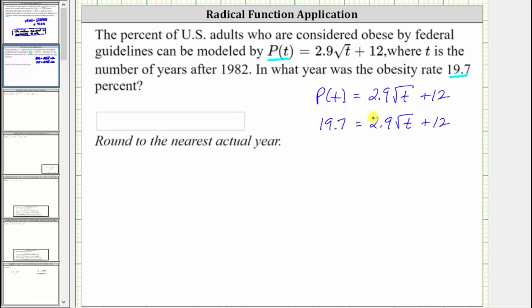Because the equation has one square root, we isolate the square root on one side of the equation. Let's first subtract 12 on both sides. Simplifying, 19.7 minus 12 is 7.7. We have 7.7 equals—on the right, 12 minus 12 is zero—the right side is now just 2.9√t.